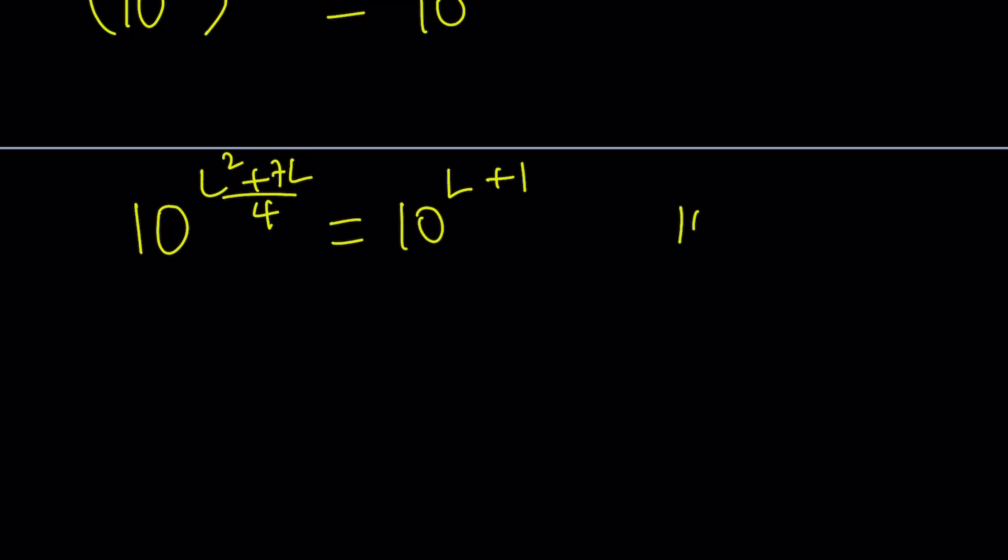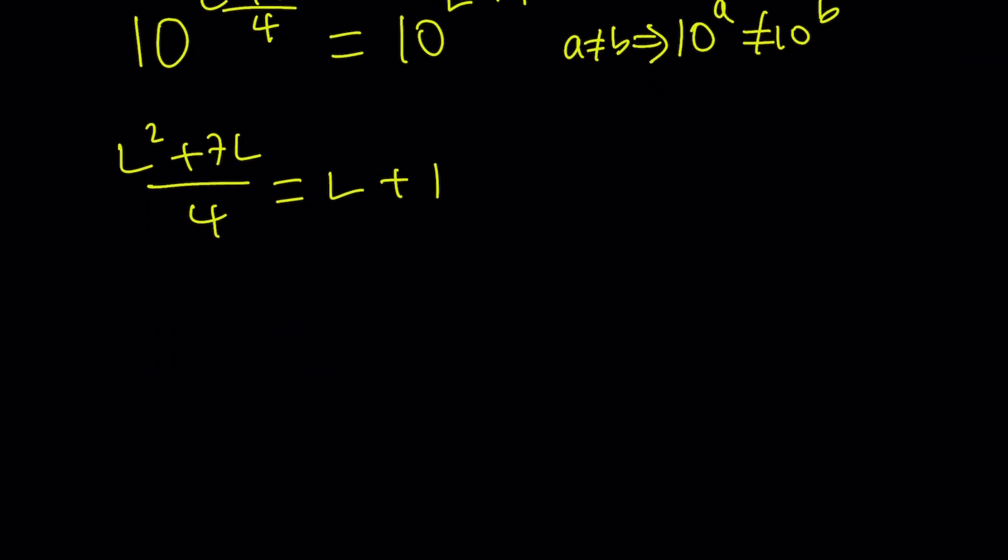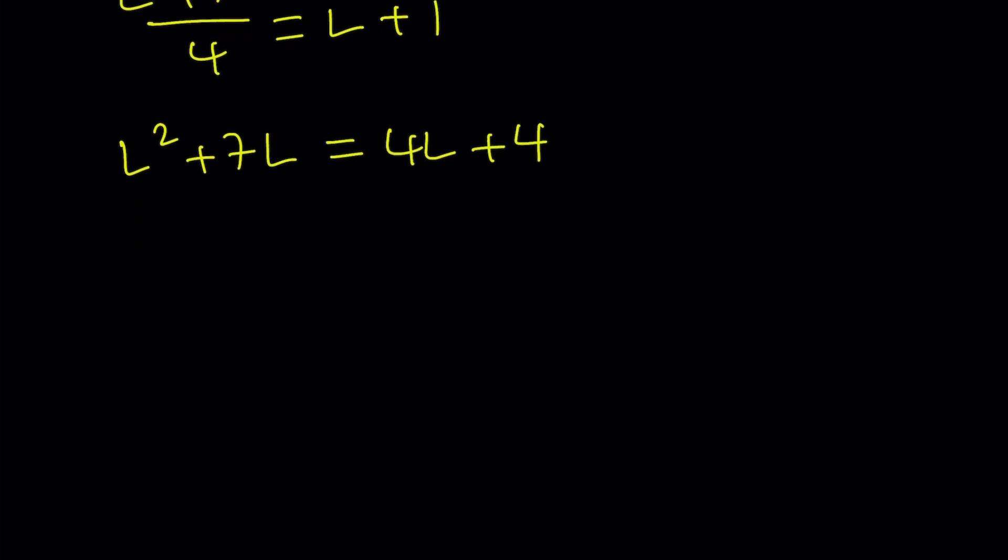If A and B are different, then 10 to the power A cannot equal 10 to the power B. So they have to be the same. From here we get L squared plus 7L over 4 equals L plus 1. We can cross multiply, and that's going to give us 4L plus 4 on the right-hand side. If we subtract 4L plus 4, putting everything on the left-hand side to get a quadratic, we get L squared plus 3L minus 4 equals 0.